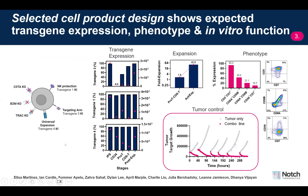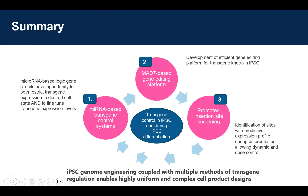We eventually identified one combination of promoter and integration site that successfully delayed production of that tricky transgene to the very end stage, allowing us to produce iPSC-derived CAR-T cells with the exact phenotype and functionality we expected. Combining all these design criteria — promoter, integration site, and transgene — we found a configuration that retains expected transgene expression throughout differentiation, provides good yield and expansion, and shows the expected phenotype at the end stage.